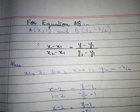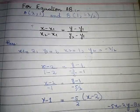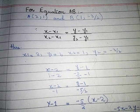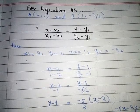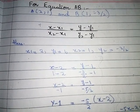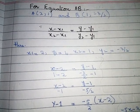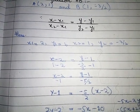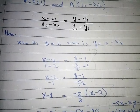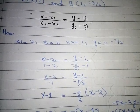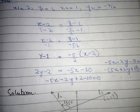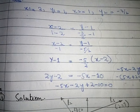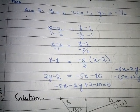For equation of AB: A is (2, 1) and B is (1, -3/2). We apply the two-point form: (x - x1)/(x2 - x1) = (y - y1)/(y2 - y1). Here x1 = 2, x2 = 1, y1 = 1, y2 = -3/2. So: (x - 2)/(1 - 2) = (y - 1)/(-3/2 - 1).